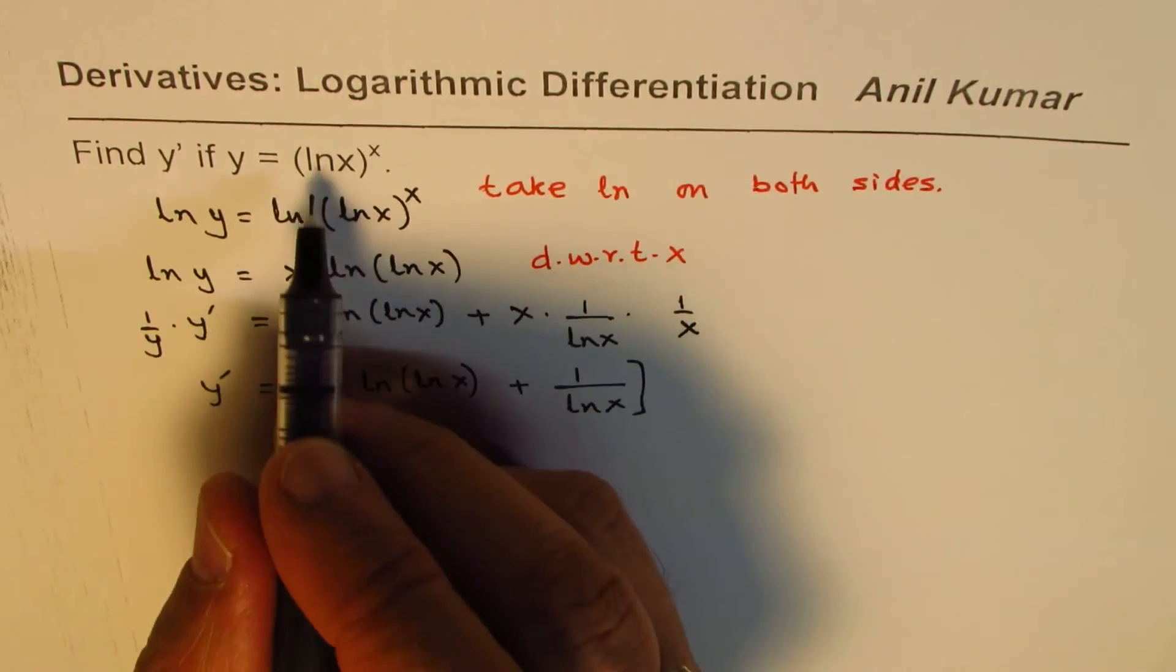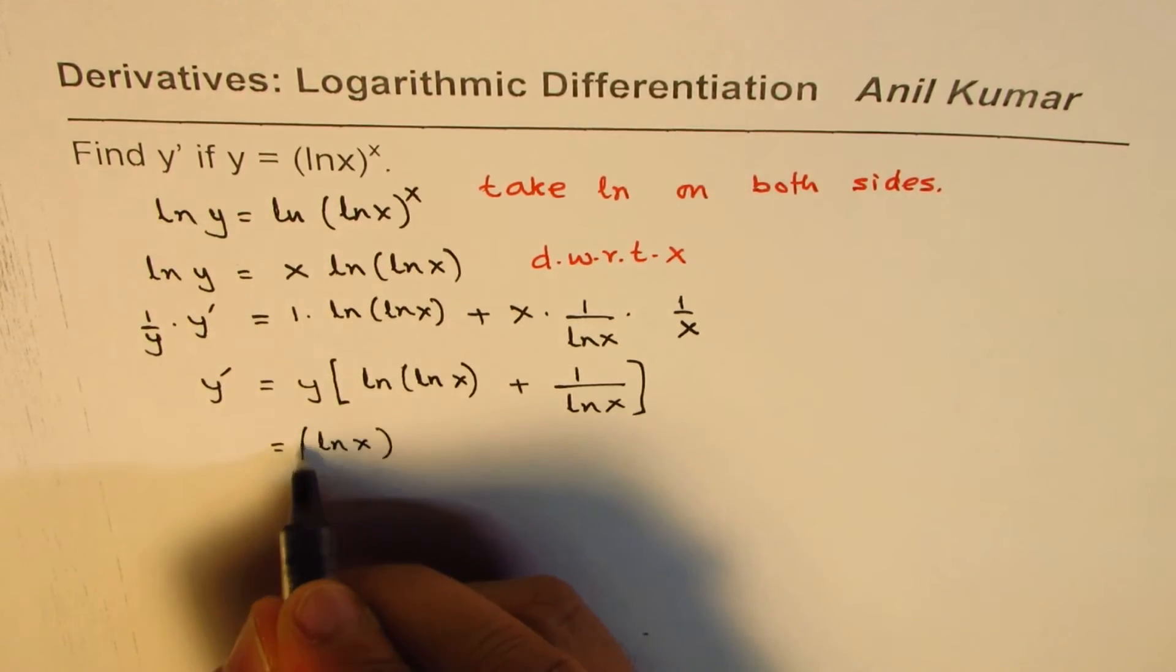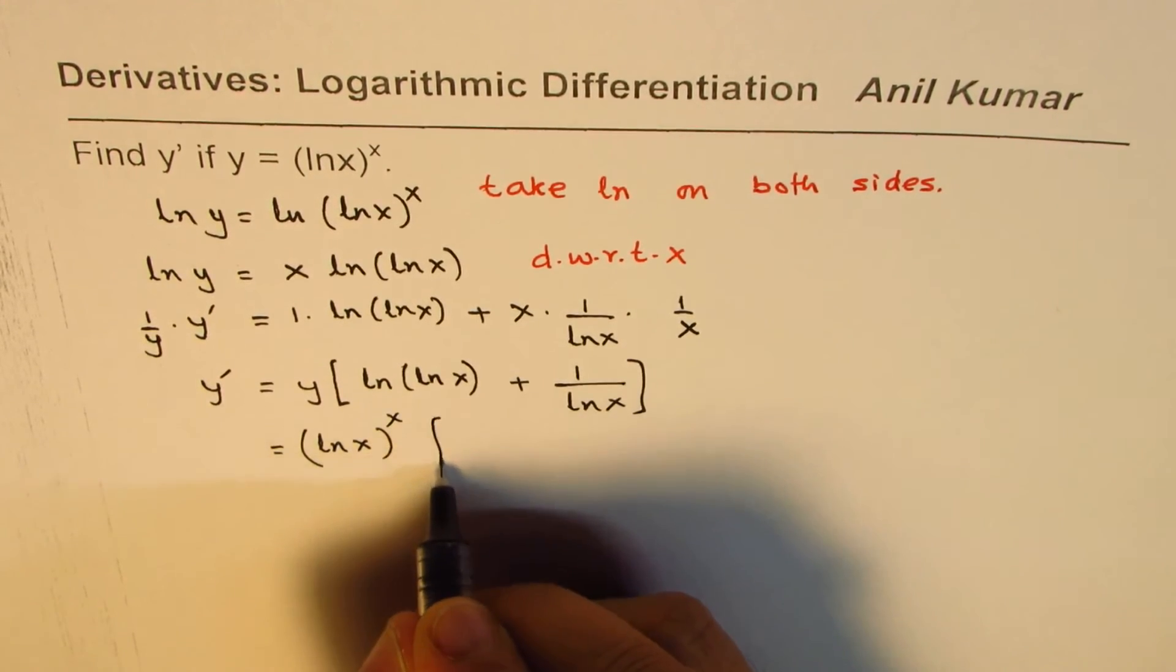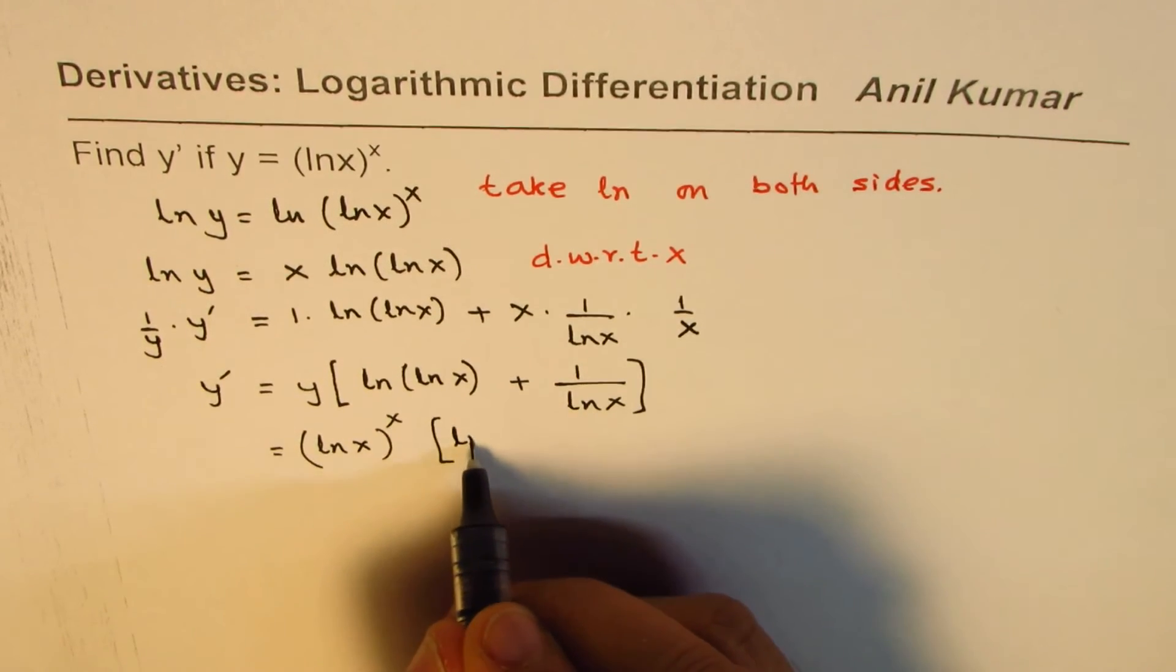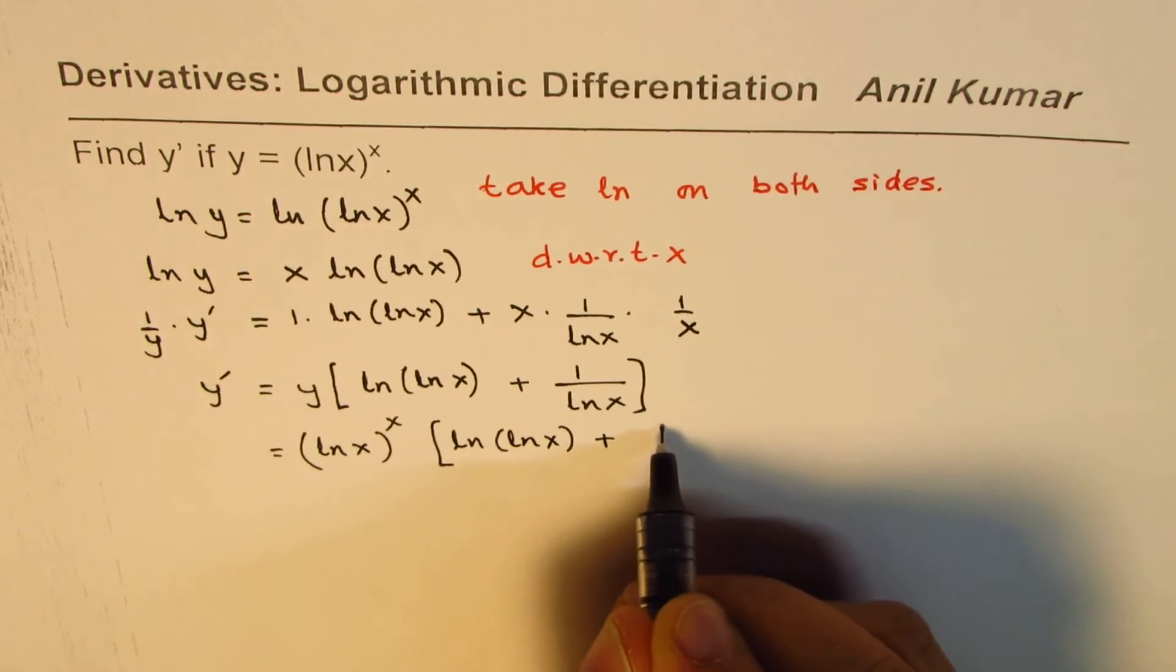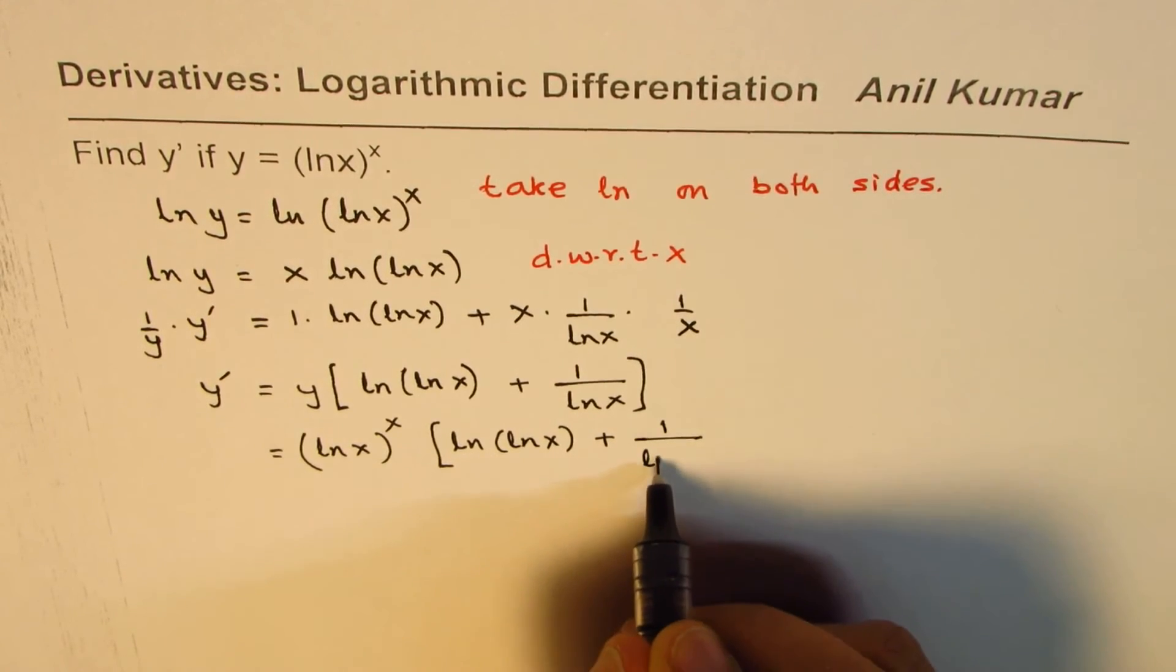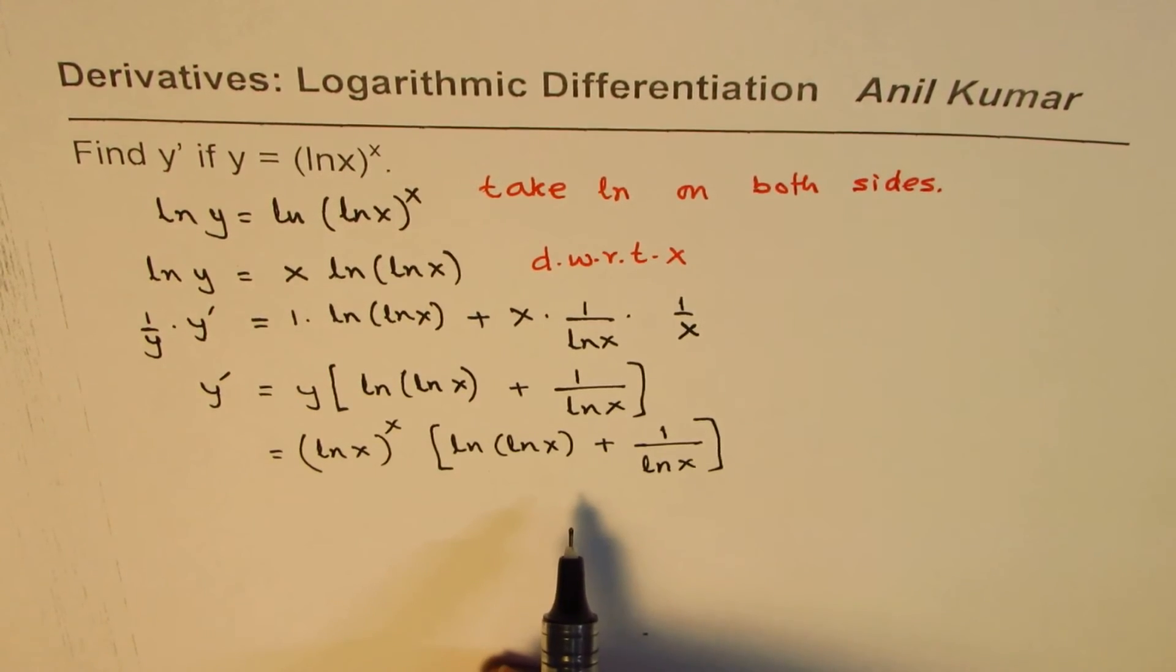Now we can replace y with ln x to the power of x, and here we get ln ln x plus 1 over ln x. So like this we can find the derivative of the given function.